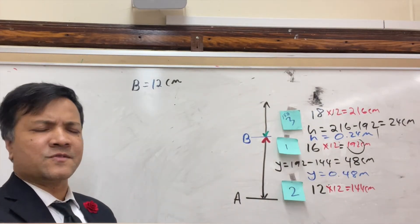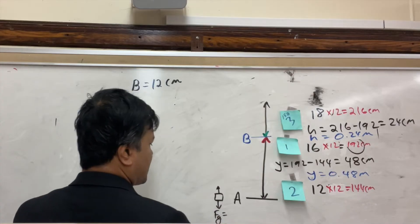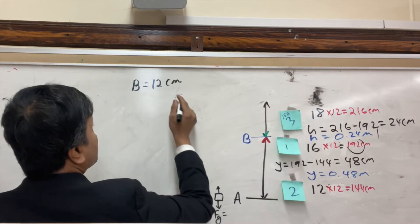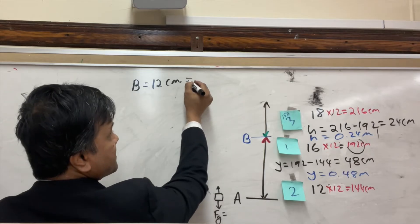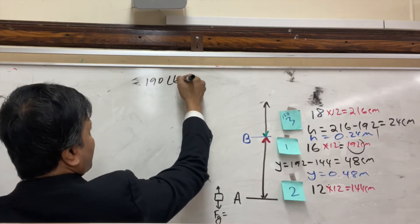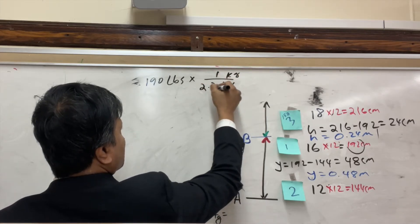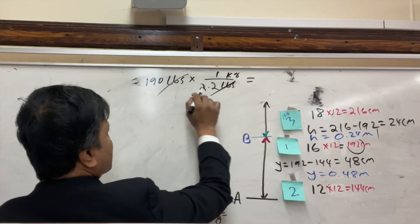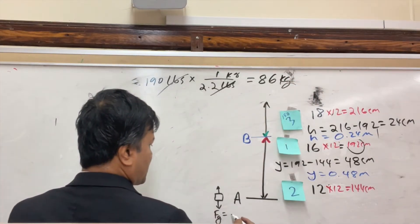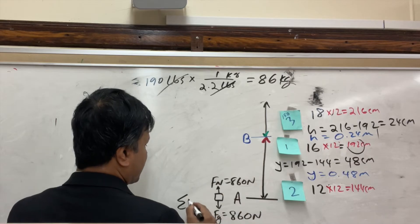At position A, your net force is zero. I'm about 190 pounds. Converting: 190 divided by 2.2 equals approximately 86 kilograms. So my weight is 86 times 10 = 860 Newtons, and the normal force Fn is also 860 Newtons. Net force at A is zero.